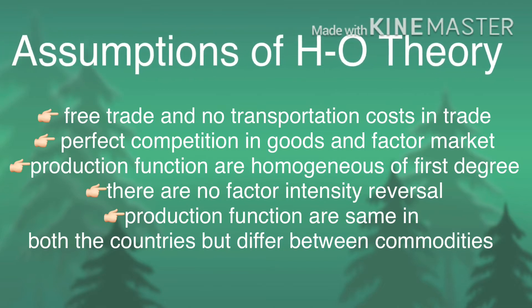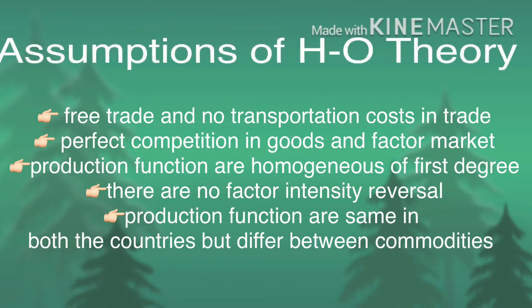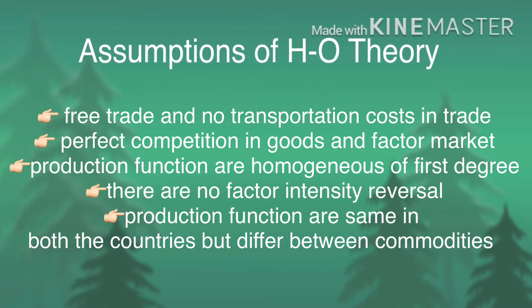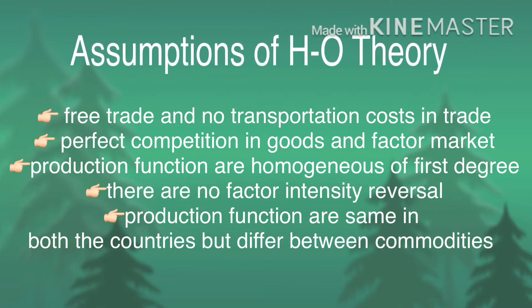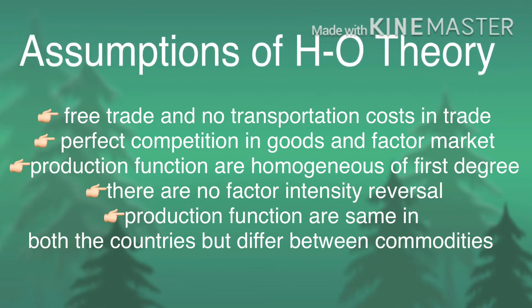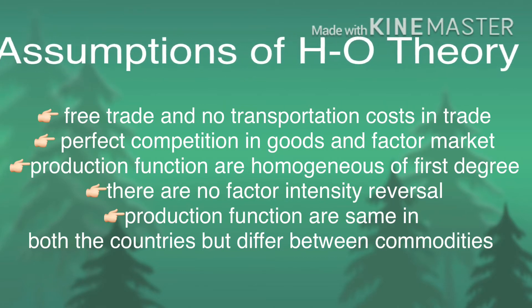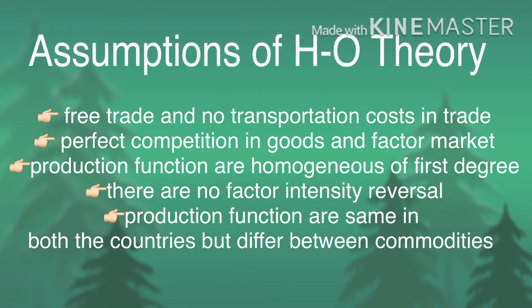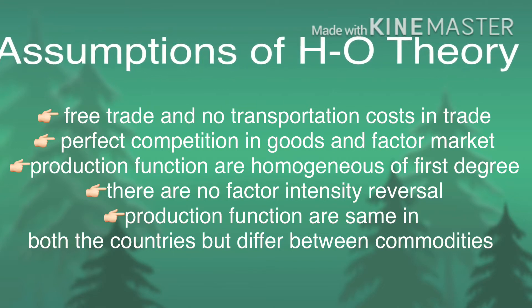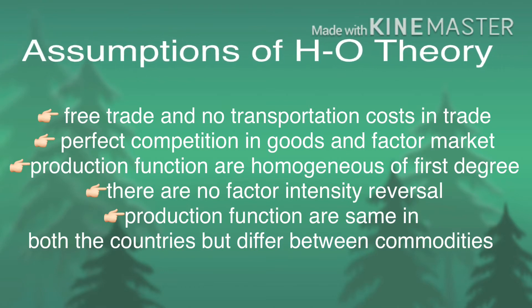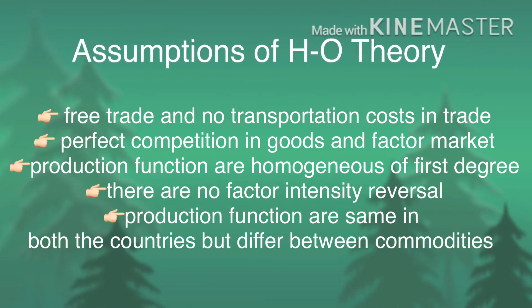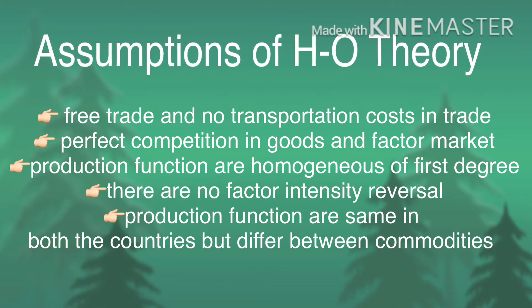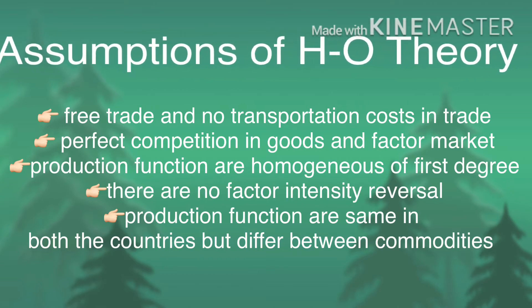The last three assumptions all refer to the characteristics of production functions. The third assumption — that production functions are linearly homogeneous — implies that production is governed under constant returns to scale. The fourth assumption means that different techniques of production are used in the two industries. Furthermore, it is assumed there is a one-to-one correspondence between factor intensities and factor prices; another way of stating this is that there is no factor reversal.